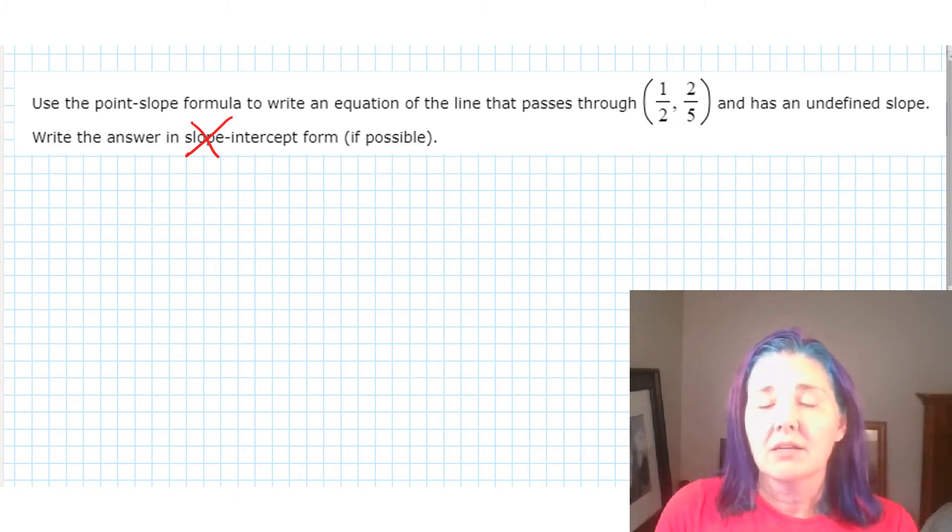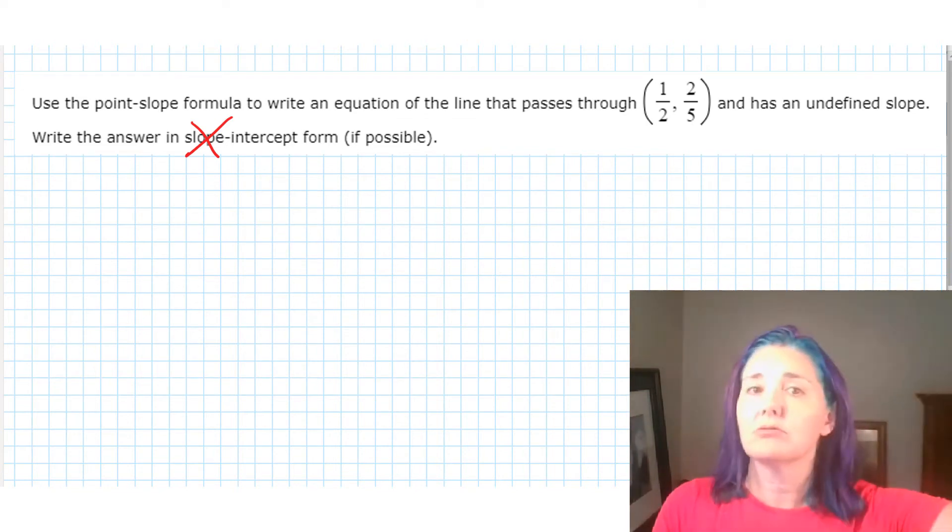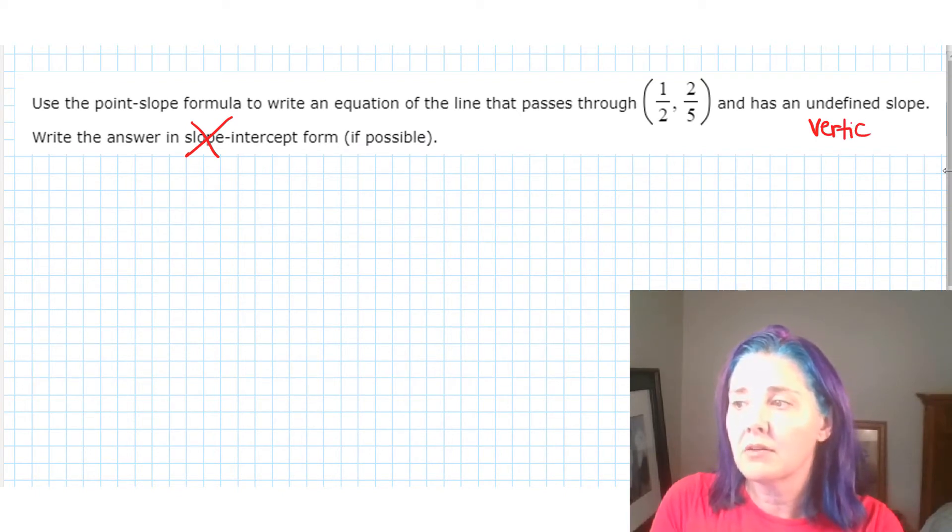Now, when you know that a line has undefined slope, what that means is it rises directly up. It's vertical. So anytime you see undefined slope, you know you're talking about a vertical line.